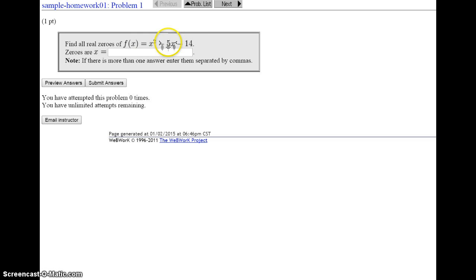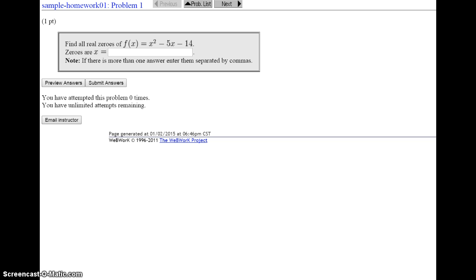Then we'd have x squared minus 5x minus 14 equals 0. So let's write that problem down. We have x squared minus 5x minus 14 is equal to 0. I just want to go back to the web and check that that was written down correctly. x squared minus 5x minus 14 equals 0.